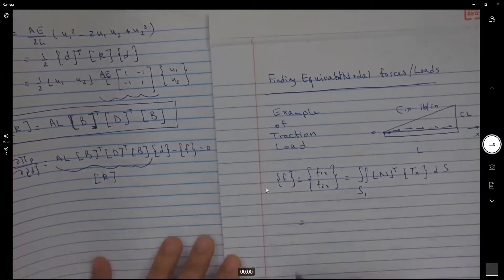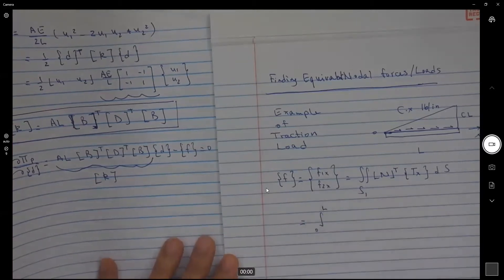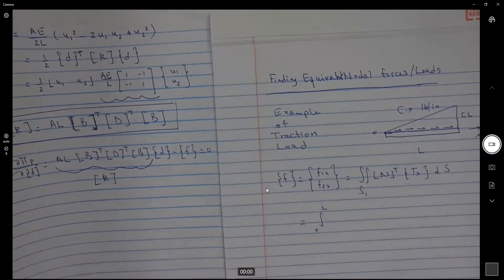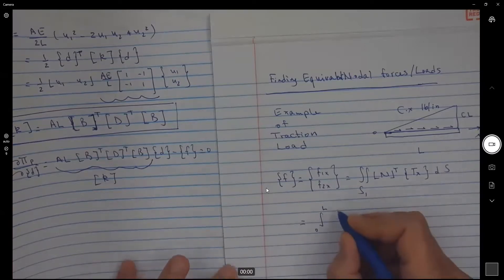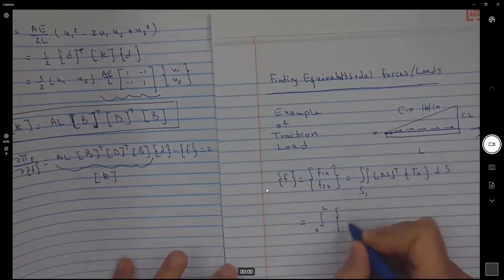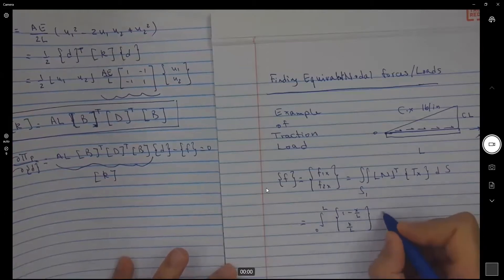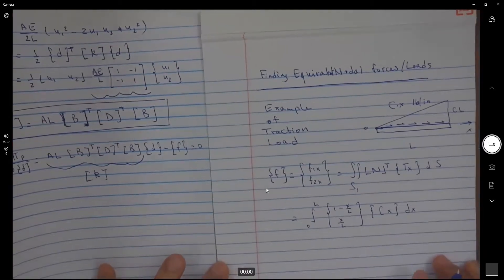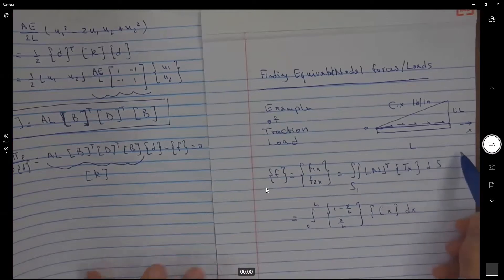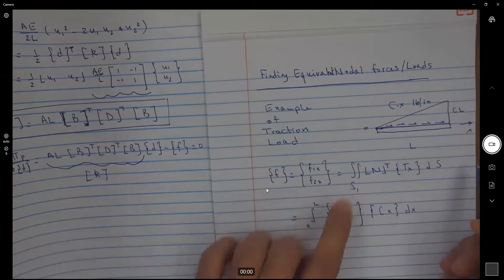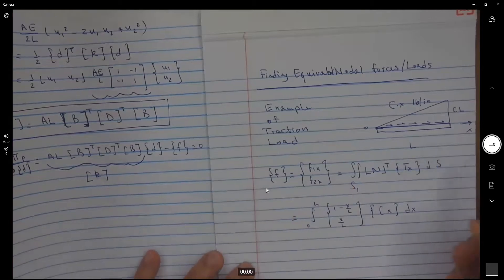This is equal to the integral from 0 to L. I'm going to transpose 1 minus x over L and here I have x over L multiplied by the traction function c times x dx. This happened because the bar element is one dimensional element, so I was able to reduce it from integration over the surface to integration over the length L.